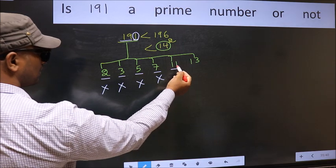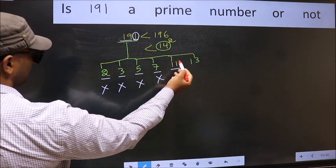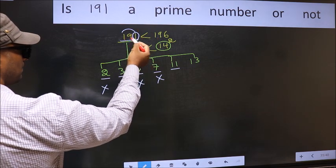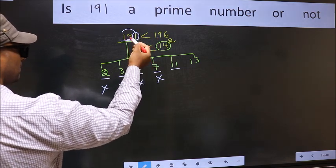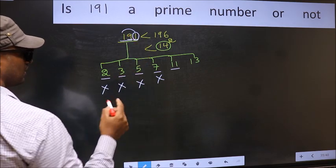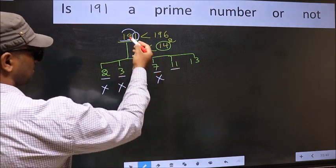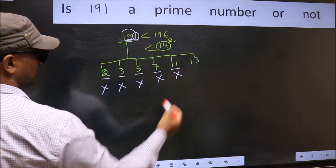Next, number 11. To check divisibility by 11, add alternate numbers. 1 plus 1 equals 2. Subtract from this. 9 minus 2, we get 7. 7 is not divisible by 11, so this number is also not divisible by 11.